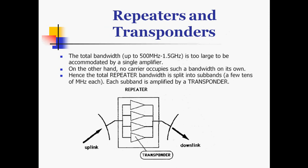The total bandwidth of 500 MHz to 1500 MHz is too large to be accommodated by a single amplifier, and no single carrier occupies such a wide bandwidth on its own. Therefore the total repeater bandwidth is split into subbands of a few tens of MHz allocated to each band, and each band is amplified by a transponder. The repeater at the satellite receives signals via uplink frequency antennas, includes several transponders, and sends processed signals back through the downlink.